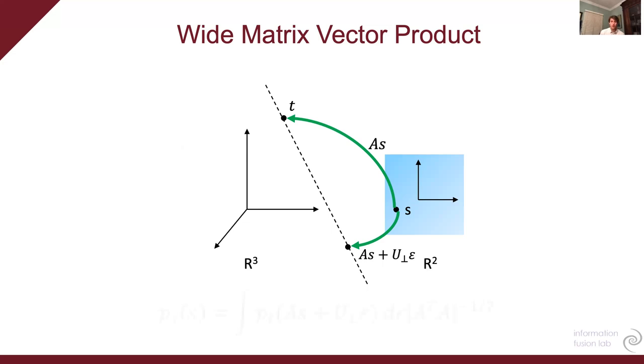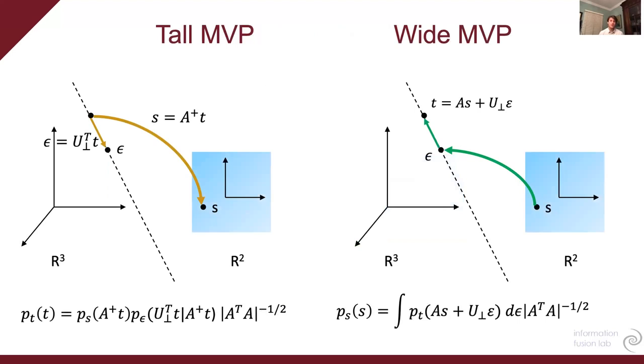So our final density is just going to be the integral over the densities of all the possible solutions. And we see that this has a lot of similar features to the tall matrix vector product. And this isn't a coincidence because it turns out that the tall matrix vector product is the stochastic inverse of the wide matrix vector product.